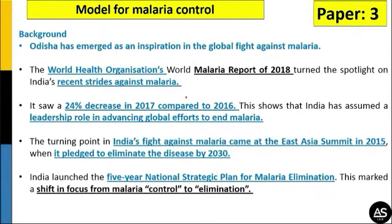The next article relates to Paper 3 and is about the model of malaria control. Odisha has emerged as an inspiration for the global fight against malaria. According to the WHO World Malaria Report 2018, there was a 24% decrease in malaria cases in India in 2017 compared to 2016. India has assumed a leadership role in global malaria elimination efforts. At the 2015 East Asia Summit, India pledged to eliminate the disease by 2030 and launched a five-year National Strategic Plan for Malaria Elimination, marking a shift from malaria control to elimination.